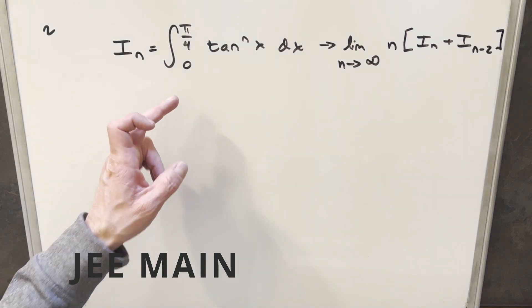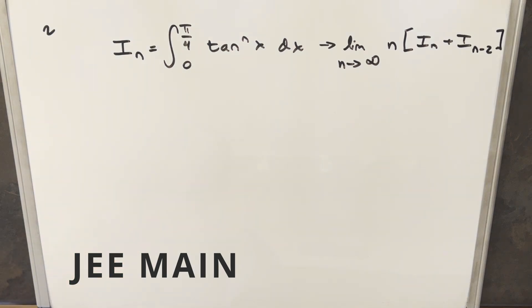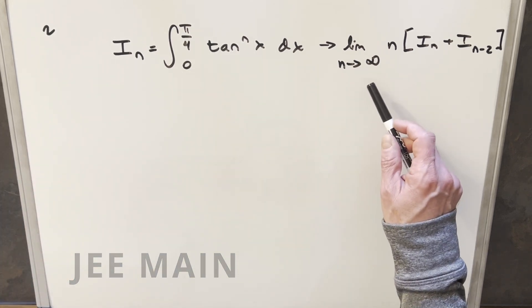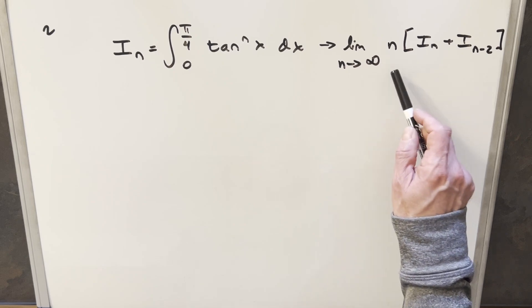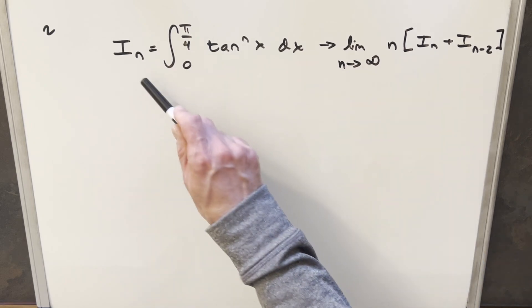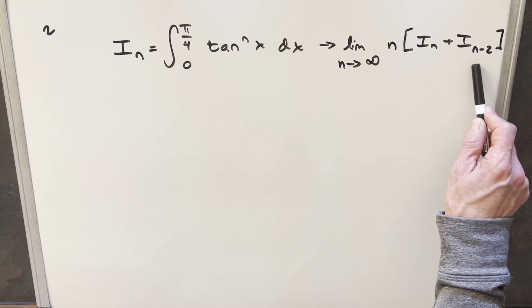We're given that for this integral from 0 to π/4, tan to the n of x dx, we're saying this is going to be I sub n. But what we have to find is the limit as n is approaching infinity of n times I sub n, which is this, plus I sub n minus 2.